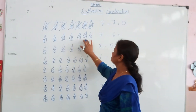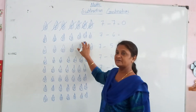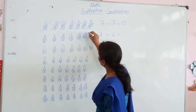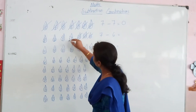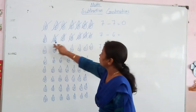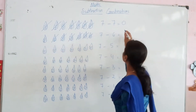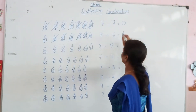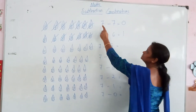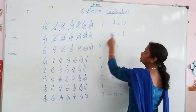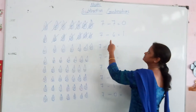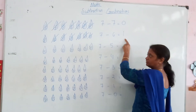We have 7 leaves. We have 6 leaves: 3, 4, 5, 6. How many leaves are left? 1. Okay? When we have 7 minus 7 is 0, we have 7 minus 6. We have 6 leaves. So we have 1 item.